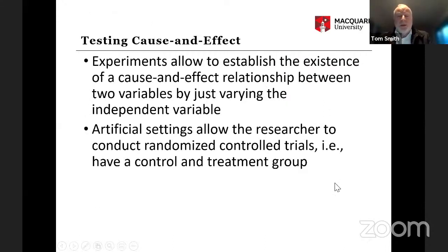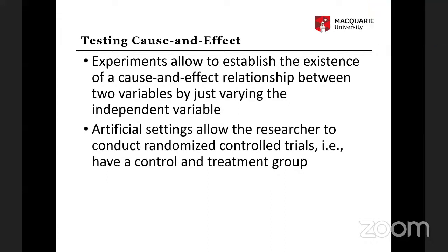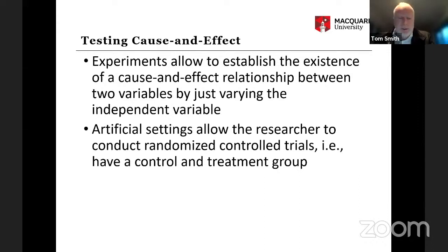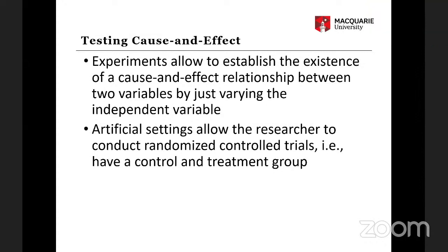This is what experiments do — they help you establish a cause-and-effect relationship. You're able to vary the independent variable, for example treatment versus placebo, and so experiments allow you to establish causation because you control that variation.